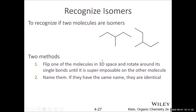To recognize whether molecules are isomers or not, the simplest way is to use the name. Apply the naming rules properly — if they have the same name, they are the same compound. If they end up with different names, they are different compounds. Using naming is the most reliable way to find out.